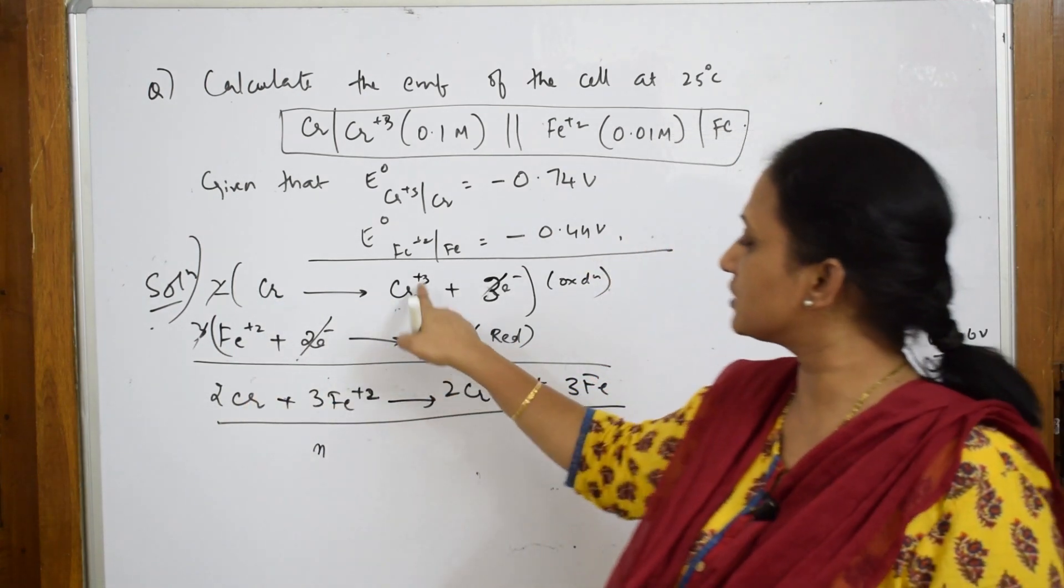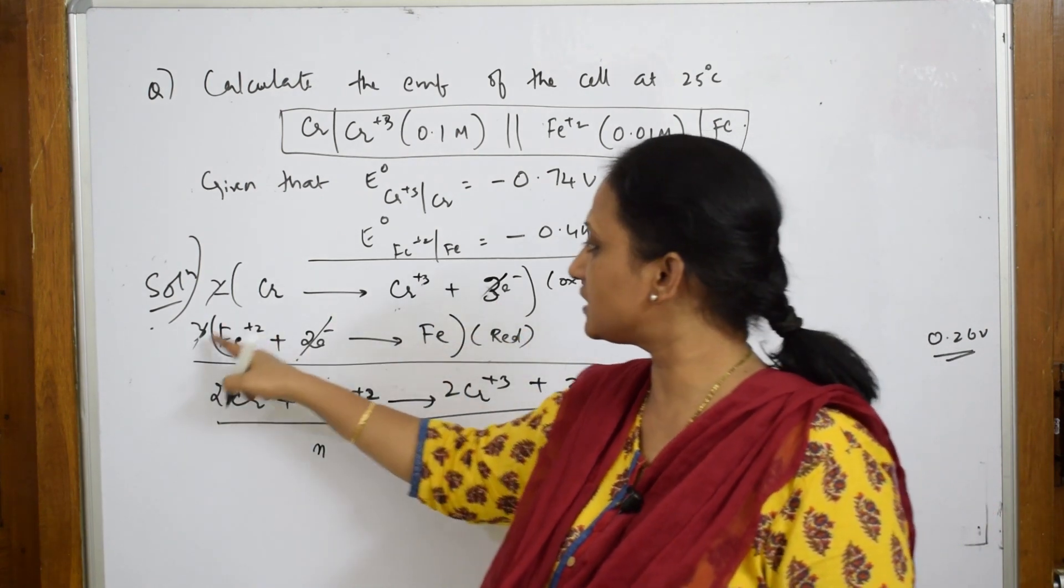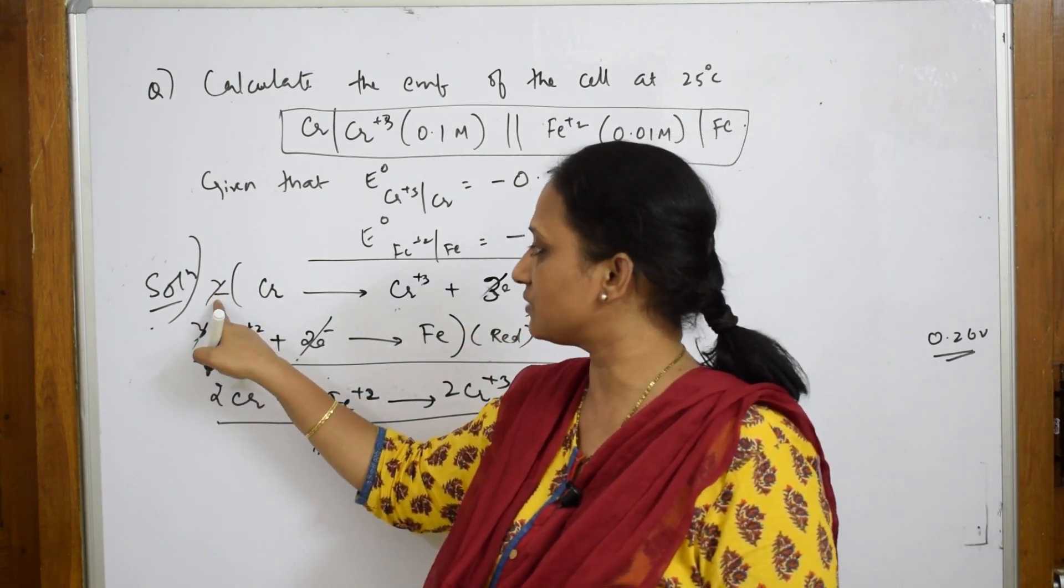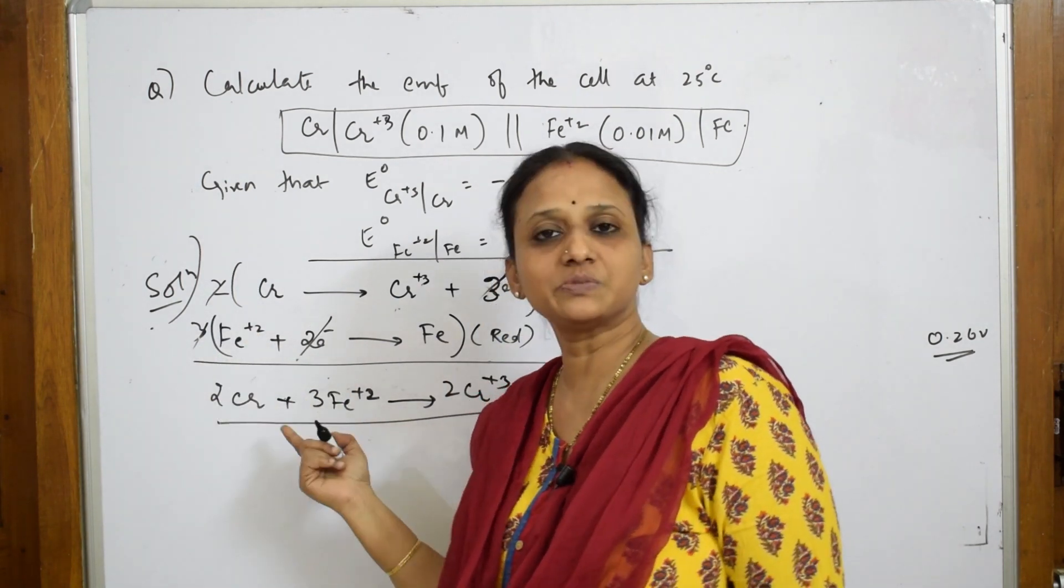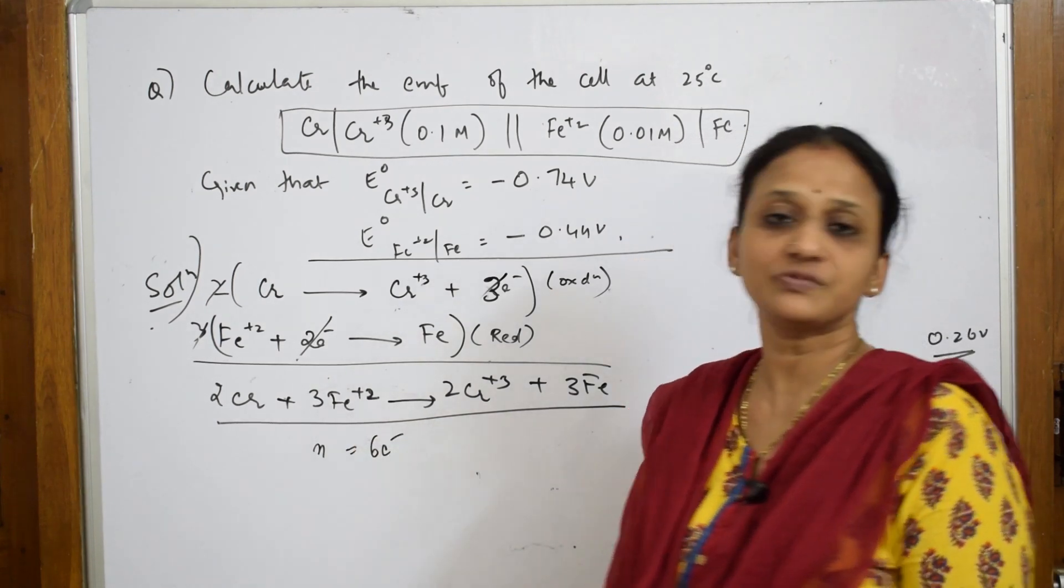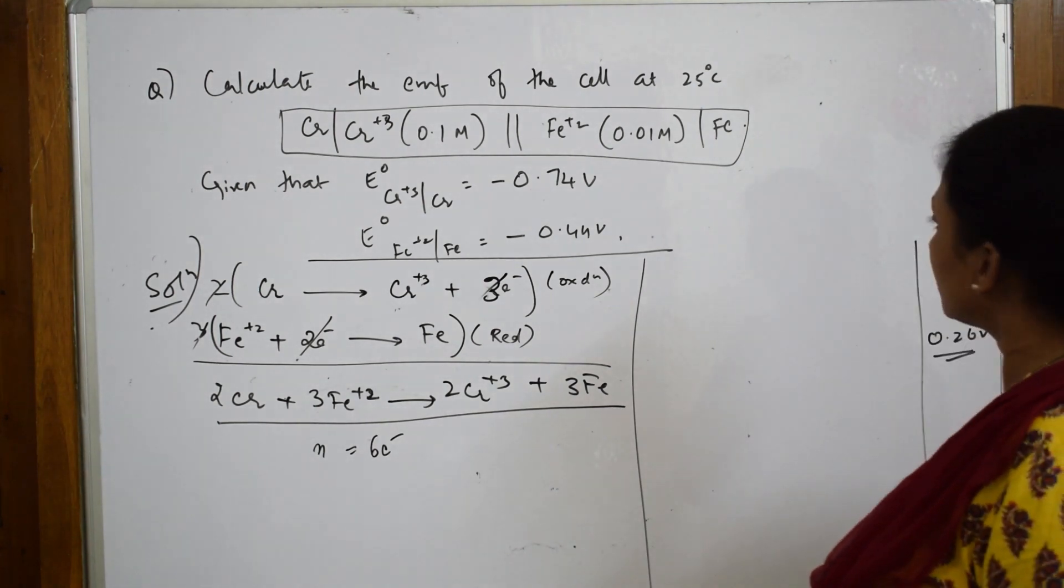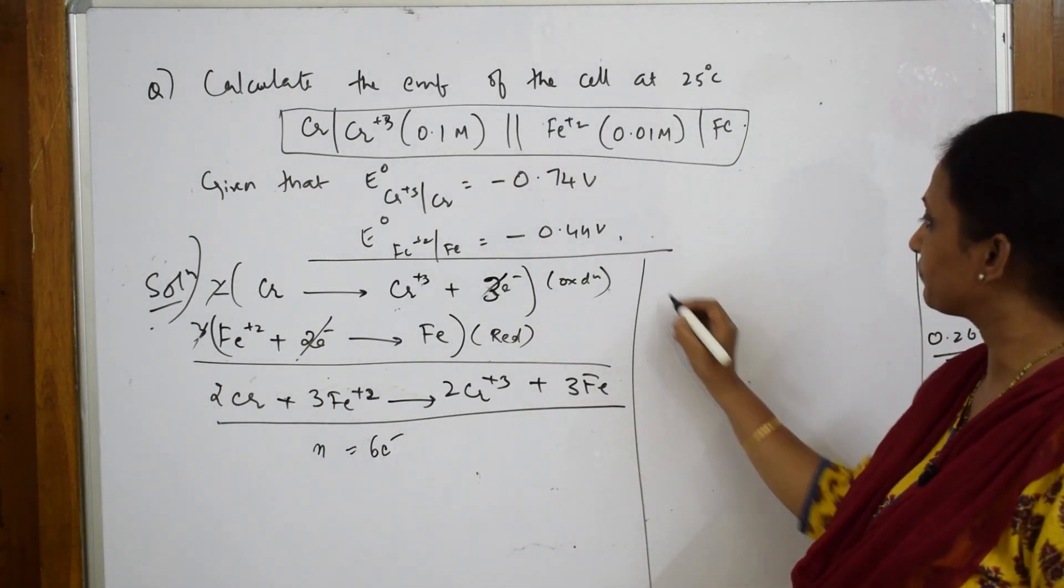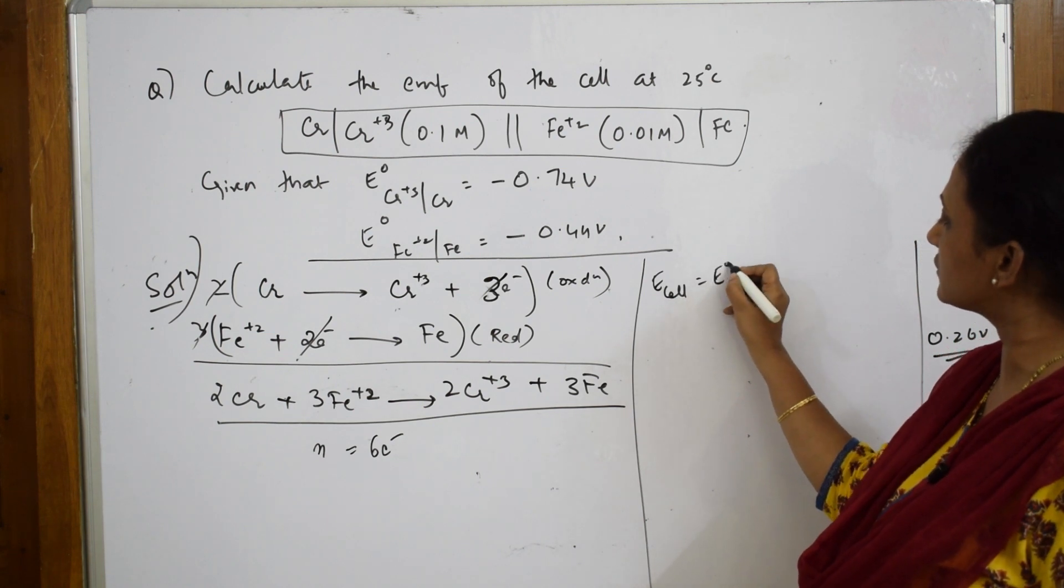After balancing the oxidation half-cell reaction (Cr with 3 electrons) and reduction half-cell reaction (Fe²⁺ with 2 electrons), we multiplied to get 6 electrons total, so n = 6. Now I need to calculate E_cell.